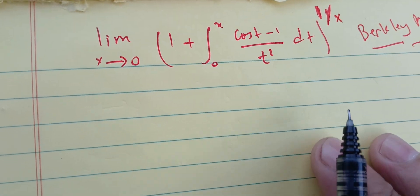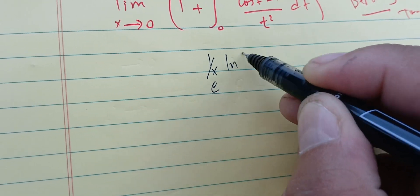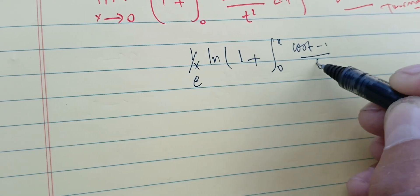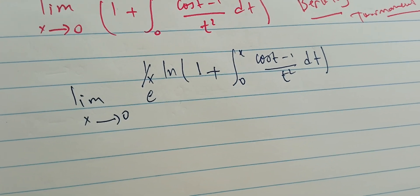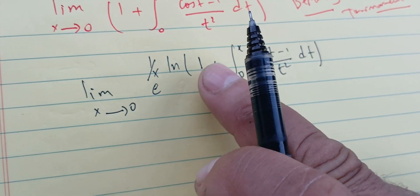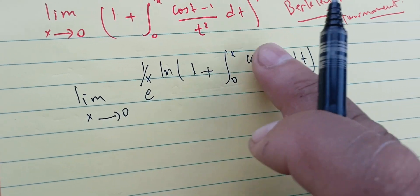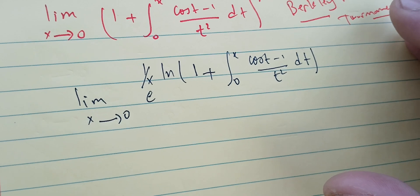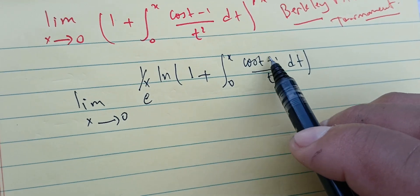We can transform this expression into the form e to the power of one over x times the natural log of one plus the integral between zero and x of (cosine t minus one) over t squared, dt. We take the limit as x goes to zero. We can simplify the natural log of one plus this expression, since x is small. The key idea is that when x is small, we can replace ln(1 + u) by u.